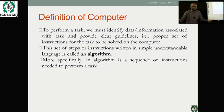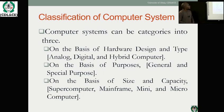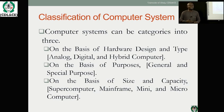More specifically, an algorithm is a sequence of instructions needed to perform a task. Irrespective of any task you want to perform, you can come up with predefined steps. These predefined steps are then converted into a programming language that the computer system can execute. As for the classification of computers, we can classify them into three basic categories: the first is based on type — analog computer, digital computer, and hybrid computer.